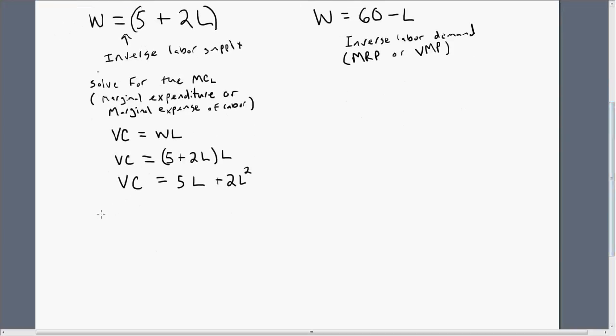To get the marginal cost of labor, we're going to take the derivative of the variable cost equation with respect to labor, and we simply get 5 plus 4L. So the marginal cost of labor is 5 plus 4L. This is an important equation for us.